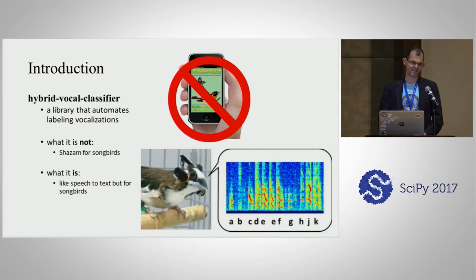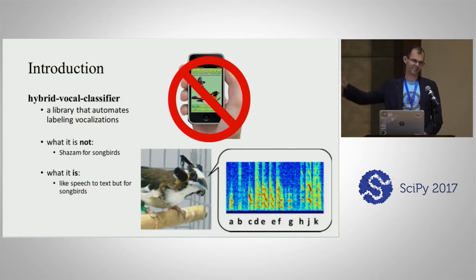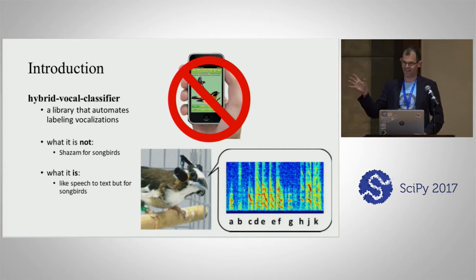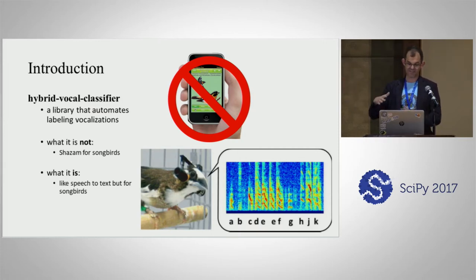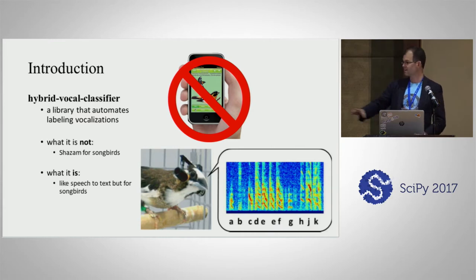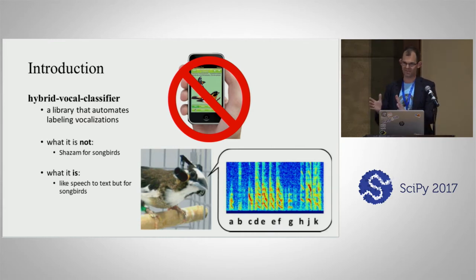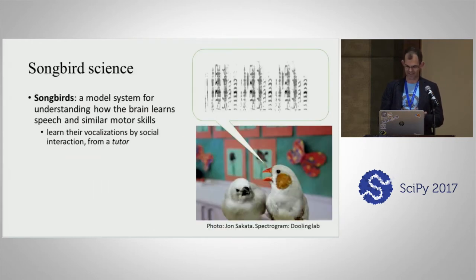So the hybrid vocal classifier is not Shazam for songbirds. You don't install it on your phone and then go outside and identify robins and grackles. Think of it more as speech-to-text for songbirds — it lets you apply labels to the elements of their song.